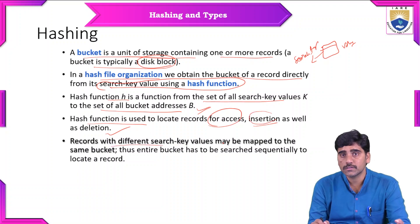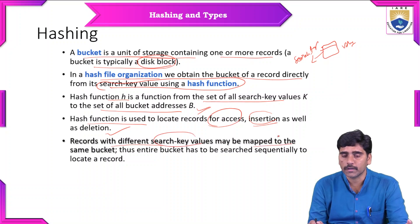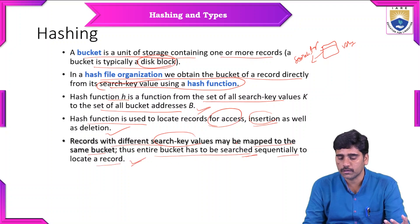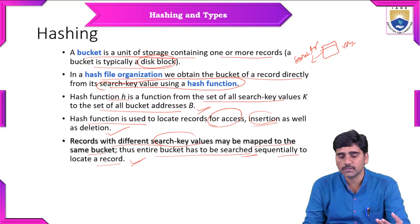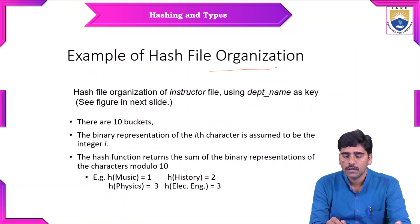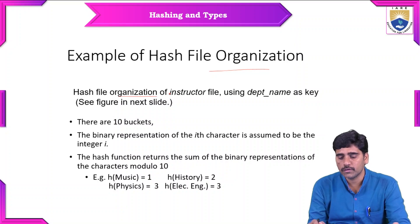Records with different search key values may be mapped to the same bucket. Thus, the entire bucket has to be searched sequentially to locate a record. Hashing is a mechanism to access the data and perform insertion operations with the help of search key values along with the hash function. An example of hash file organization uses the instructor file with department name as key.